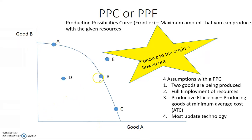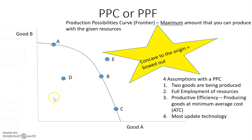Another assumption is full employment of resources — in this economy, all resources are being utilized to create the production possibility curve. Next is productive efficiency, which is especially key for AP Micro. That's where you're producing goods as cheaply as possible, being very efficient with how you make this maximum amount of goods. And lastly, you're utilizing the most up-to-date technology while producing. These four assumptions give you that frontier.